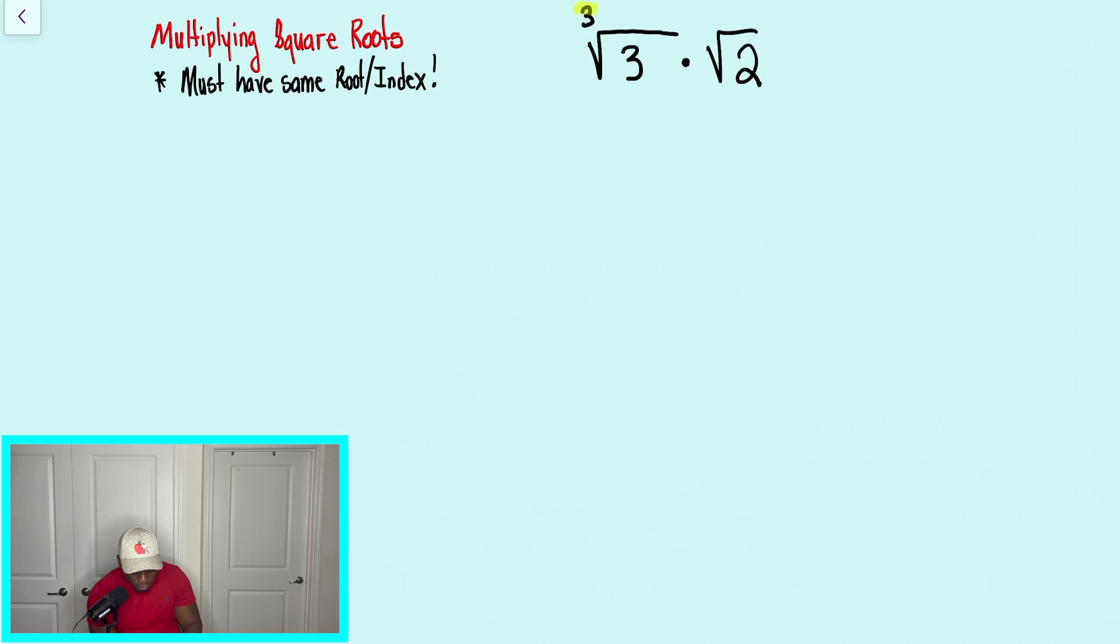And what that means is if you look where this 3 is, that's the root. So what they're saying is 3 is a cube root and radical 2, that's a square root. So because they're different roots, we cannot multiply them. There's nothing that we could do with this problem.